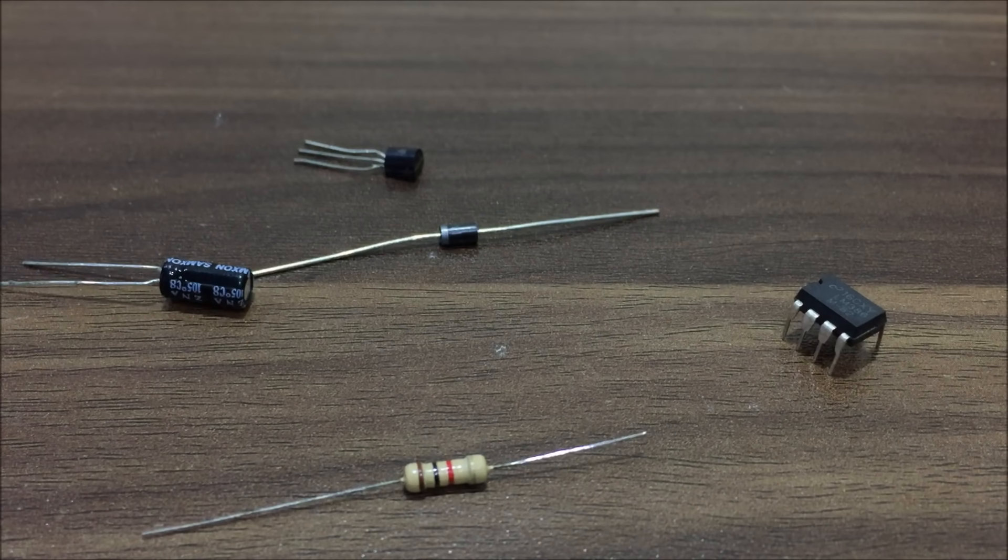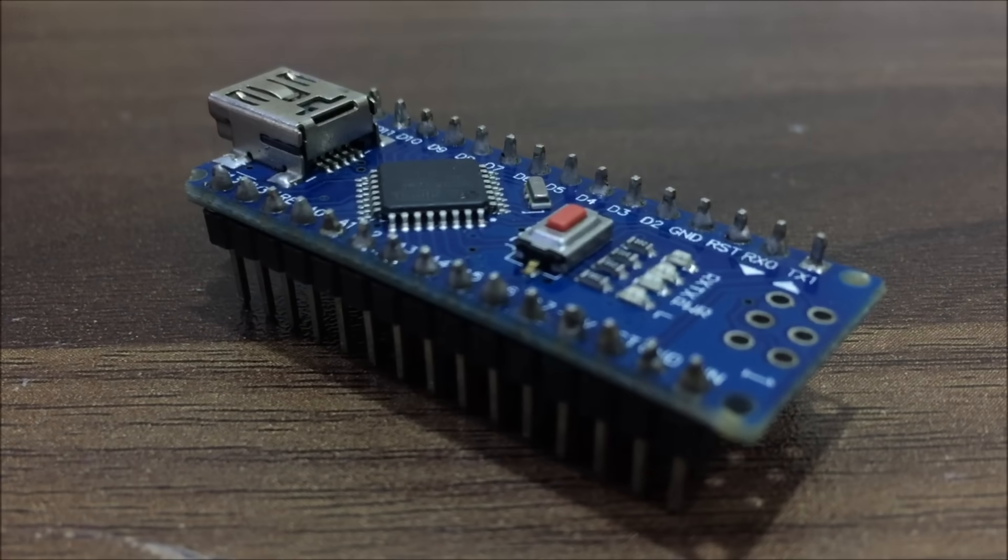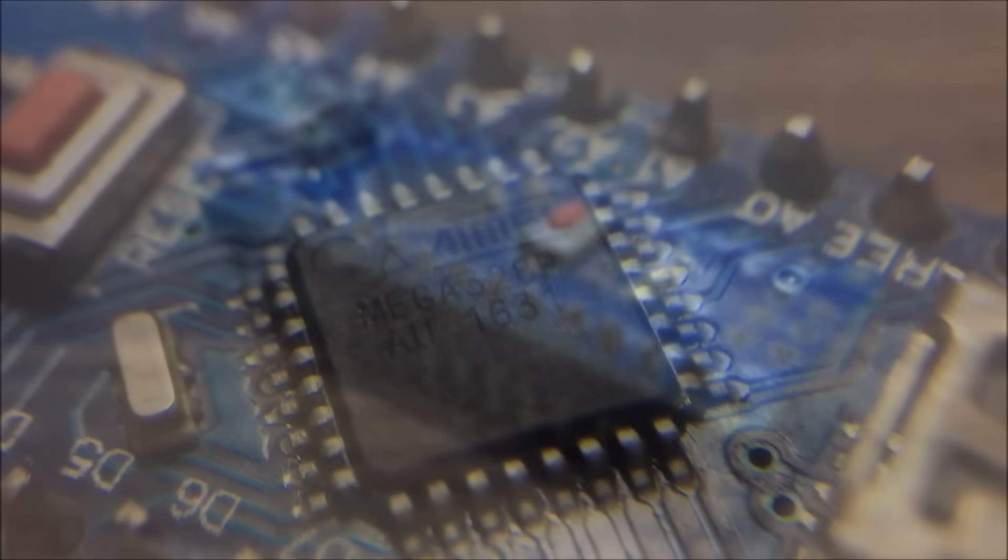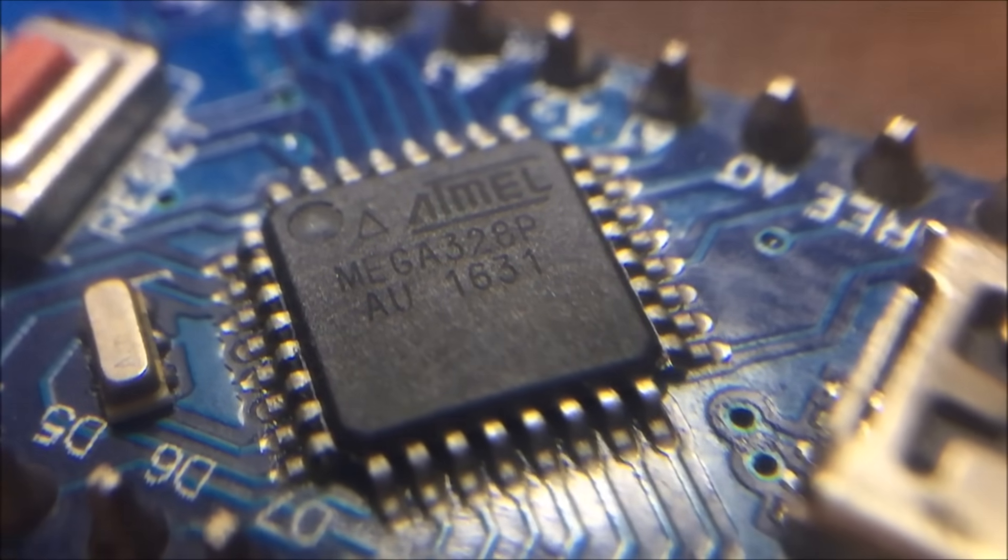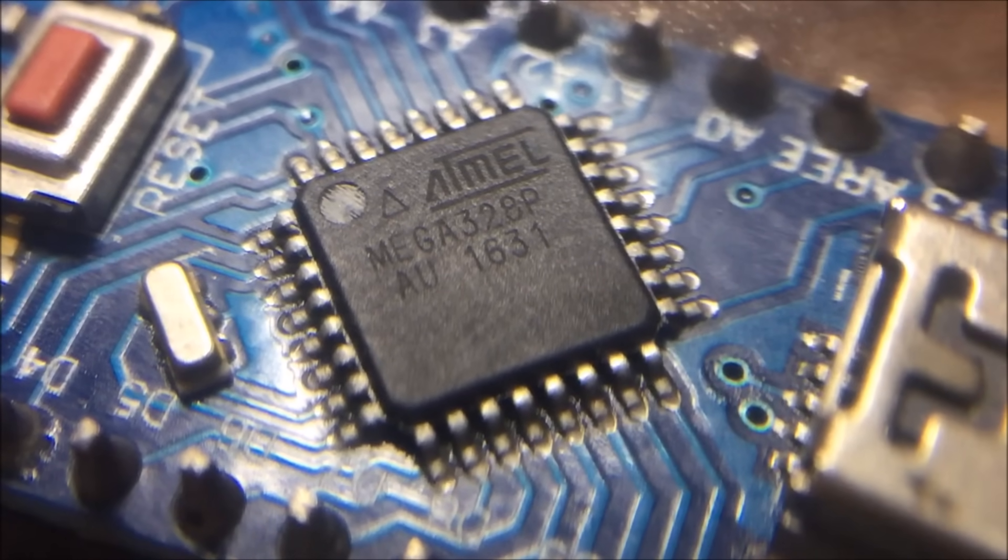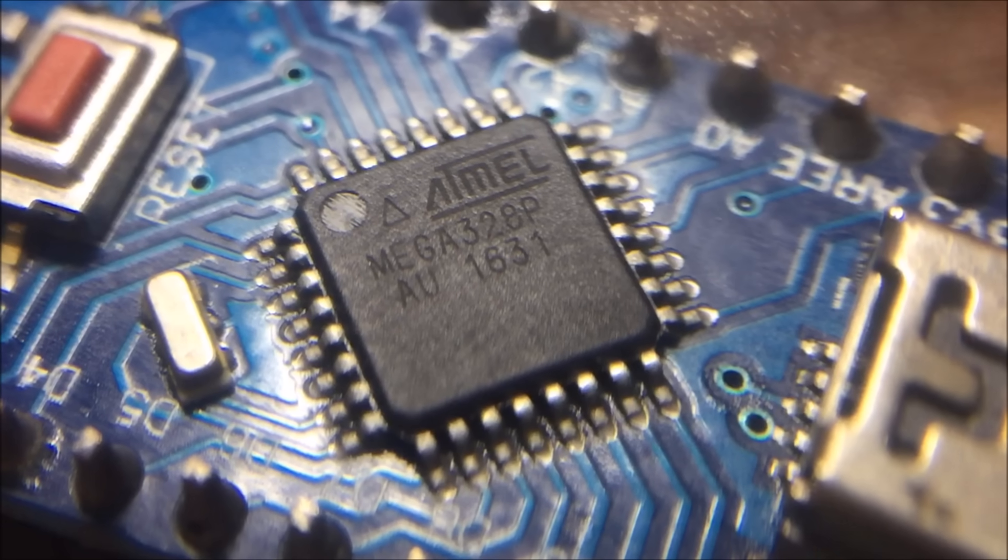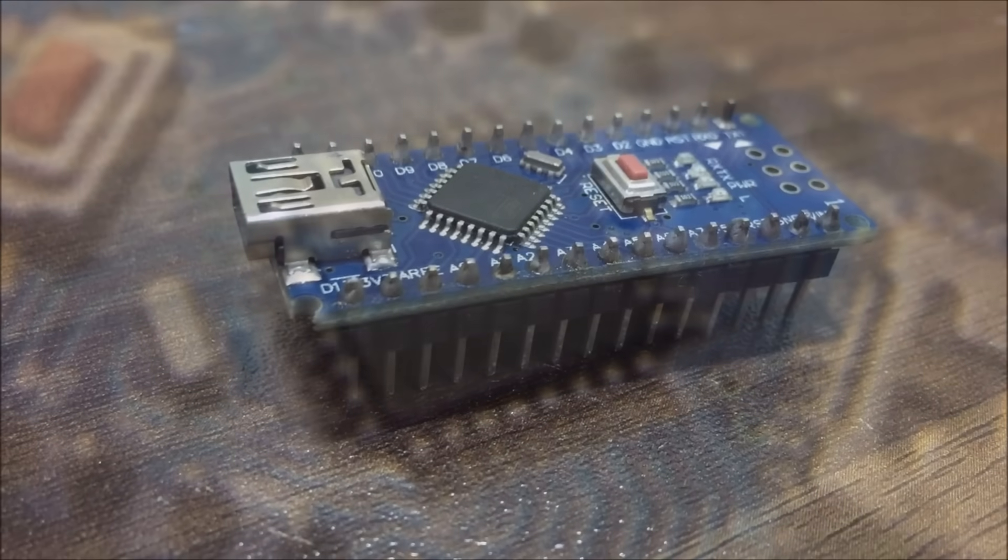Now if we talk about their types, they are divided into two groups. The first one is a square IC like this ATmega328 on Arduino Nano. You can see that it has pins on all four sides, which in some ICs contain 80 pins, and in some ICs it contains 100 pins. Even these pins reach more than 500.